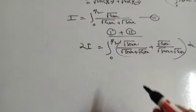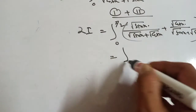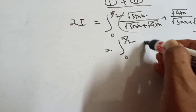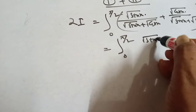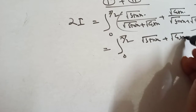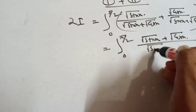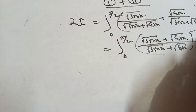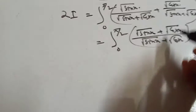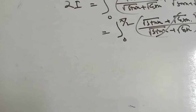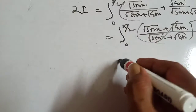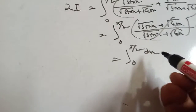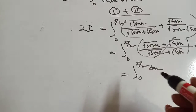Now you will see the denominator is the same. So combining the numerators: √sinx plus √cosx, divided by √sinx plus √cosx. This will be cancelled, giving the integral from 0 to π/2 of dx.